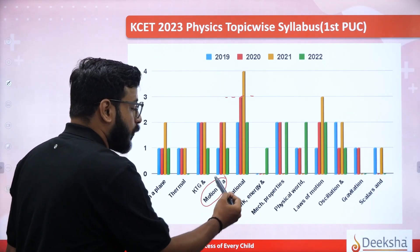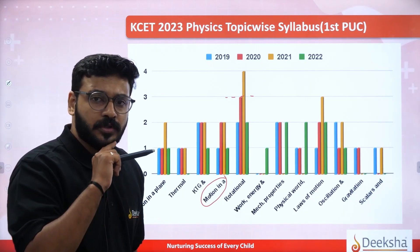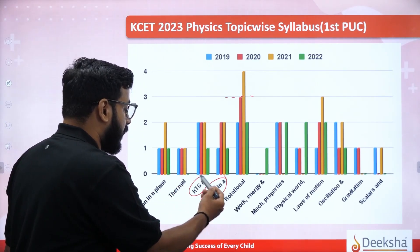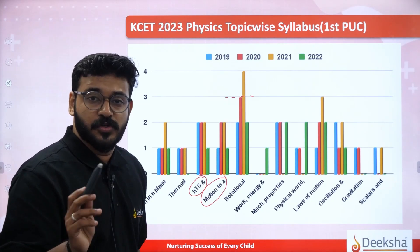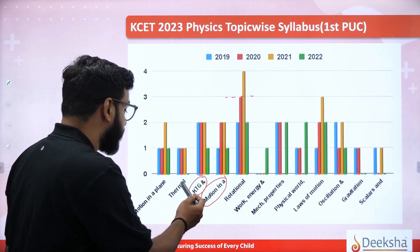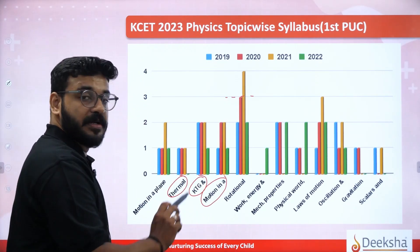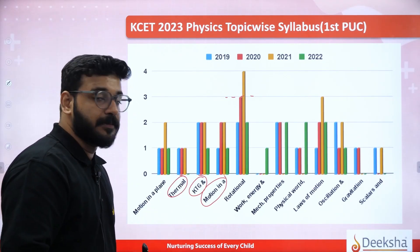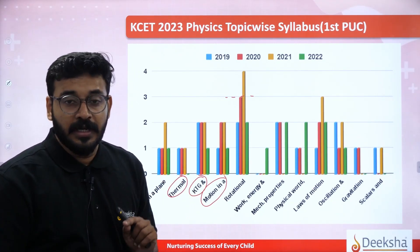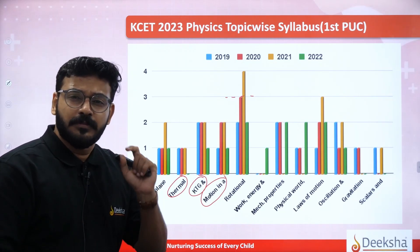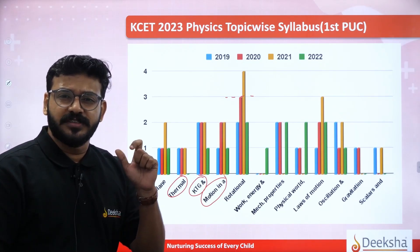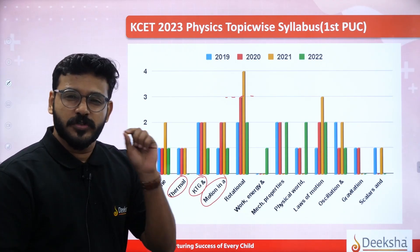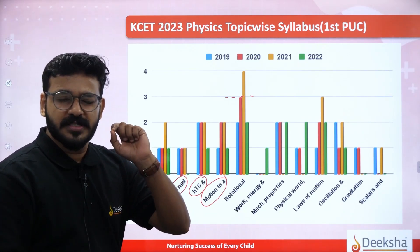Motion in a plane and motion in a straight line — at least one more question each. Thermodynamics and kinetic theory of gases are also important — at least one or two questions. Thermal properties every year consistently give one more question. Thermal properties is a very good chapter — concepts are very limited, formulas are very limited, so just practice and you will surely get marks.